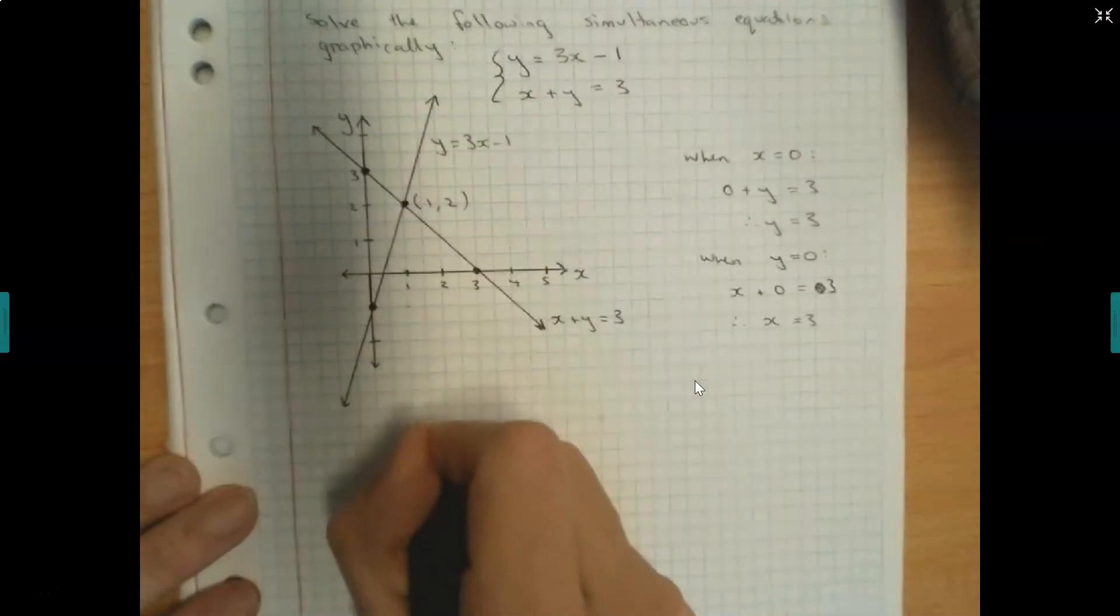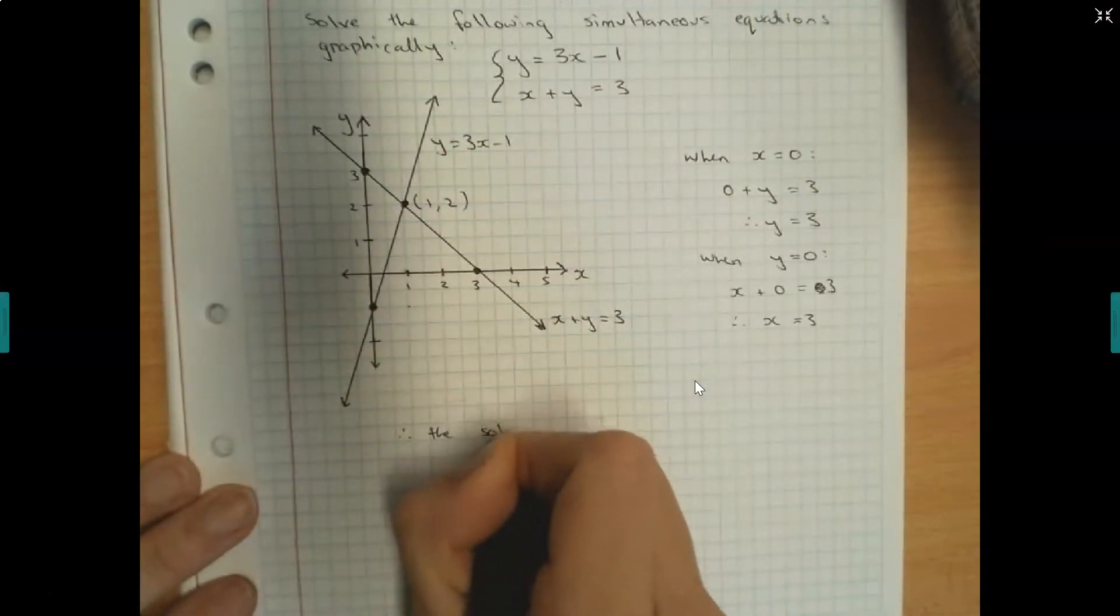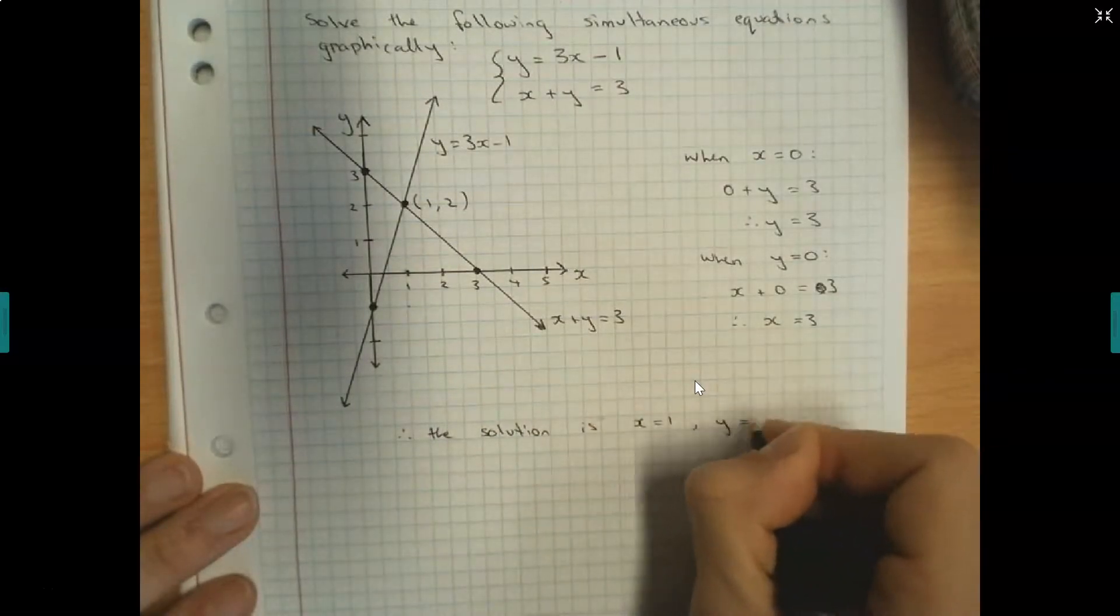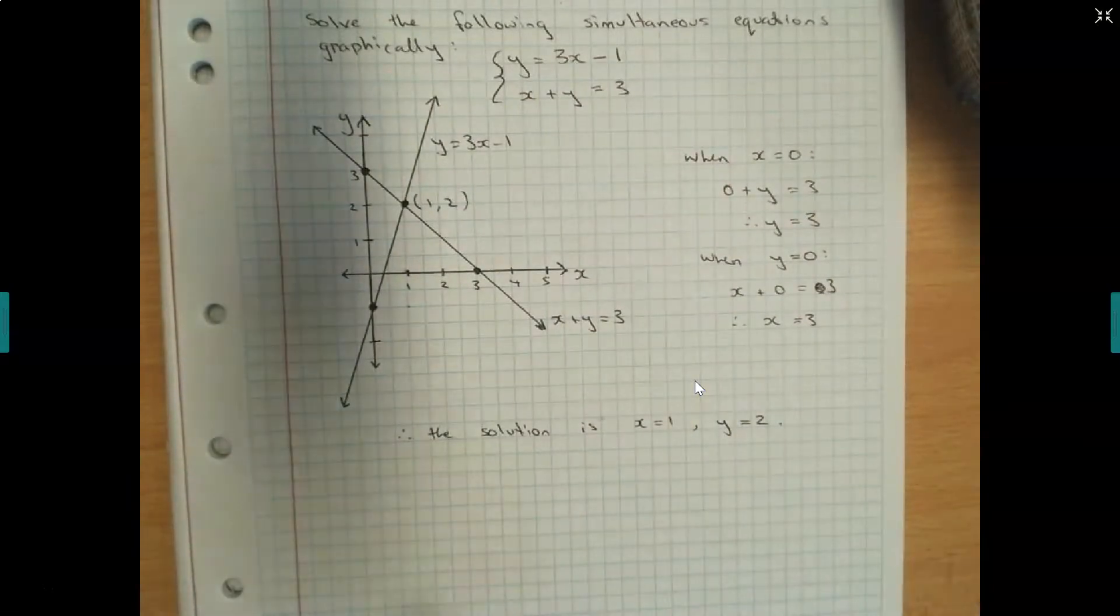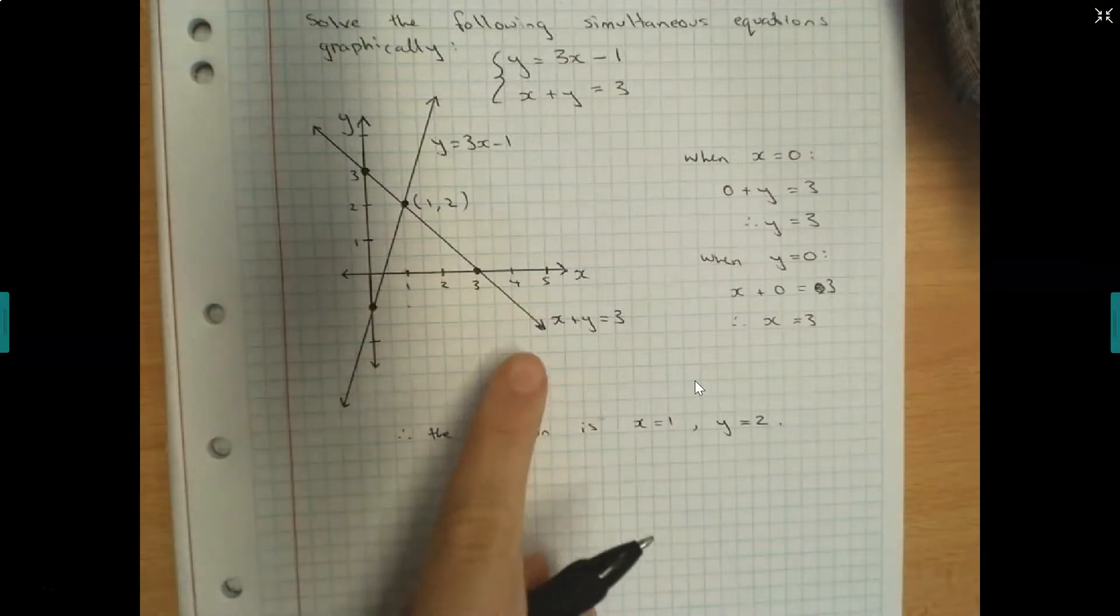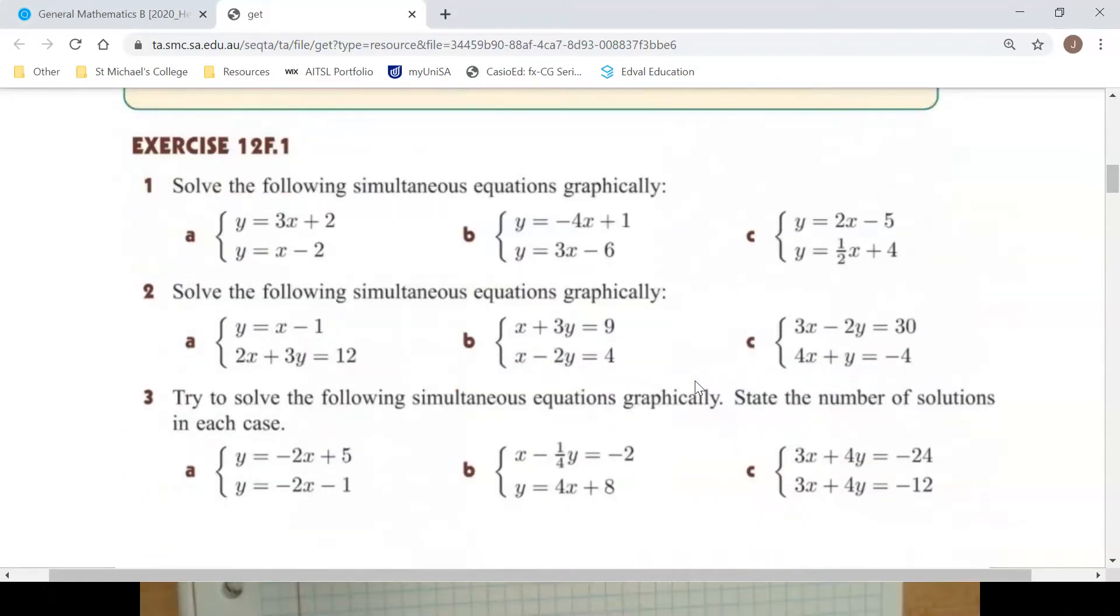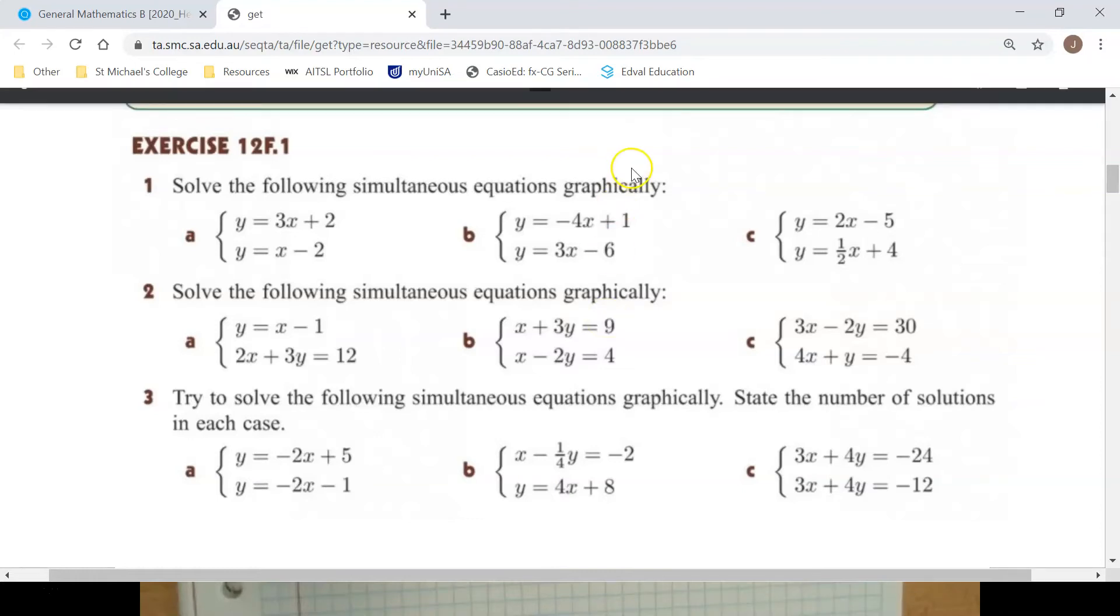Therefore, the solution is x equals 1, y equals 2. Now just notice a few things about my graph. Both my axes are labeled. I have put my arrows on each of the different axes and on the lines to show that they're continuous. Make sure that you're doing that for each question that you work through. Now you're going to have a go at working through some of these which I've listed on Seesaw to find a graphical solution to those equations.